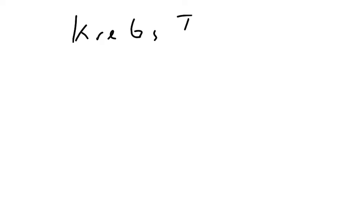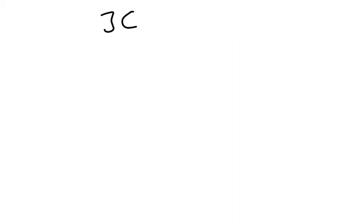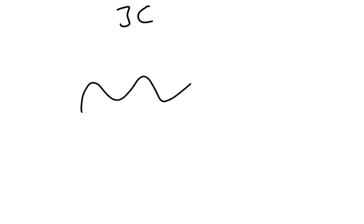So now we're going to talk about the Krebs cycle, or the TCA tricorboxylic acid cycle. If you remember, the product of glycolysis was a three-carbon compound called pyruvate, and that's produced in the cytoplasm. The next thing we do is start aerobic respiration, and aerobic respiration occurs in an amazing organelle called the mitochondria.